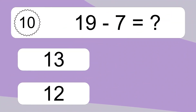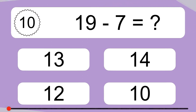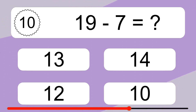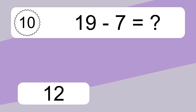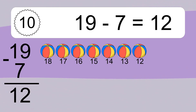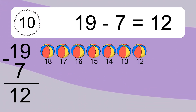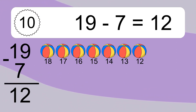19 minus 7 equals what? 19 minus 7 equals 12. Let's count it. 18, 17, 16, 15, 14, 13, 12.